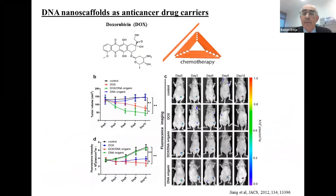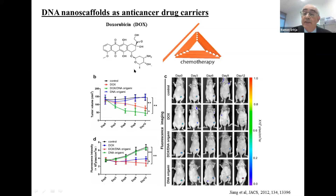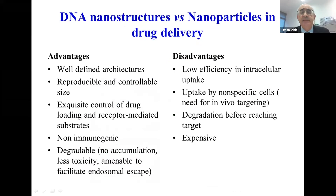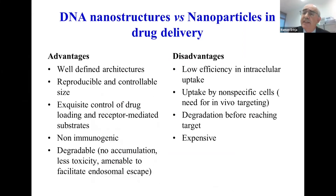Another example in mice uses an origami loaded with doxorubicin, because doxorubicin is an intercalant. In this case, the drug is bound to the DNA structure just by intercalation. This also provides very good reduction of tumors in mice. In general, DNA structures have the advantage of a very well-defined architecture — you can add exactly the number of drug molecules that you want and direct these compounds to the targeted tissue.